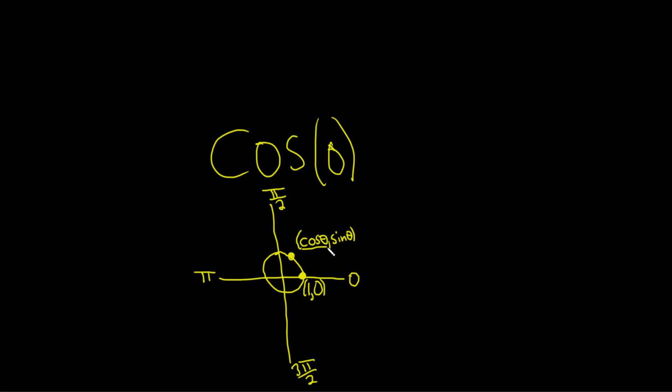So cosine is the x coordinate on the unit circle. This means that the cosine of zero is equal to this number here, which is one. Just a quick way to come up with it. I hope this video has been helpful. Good luck.